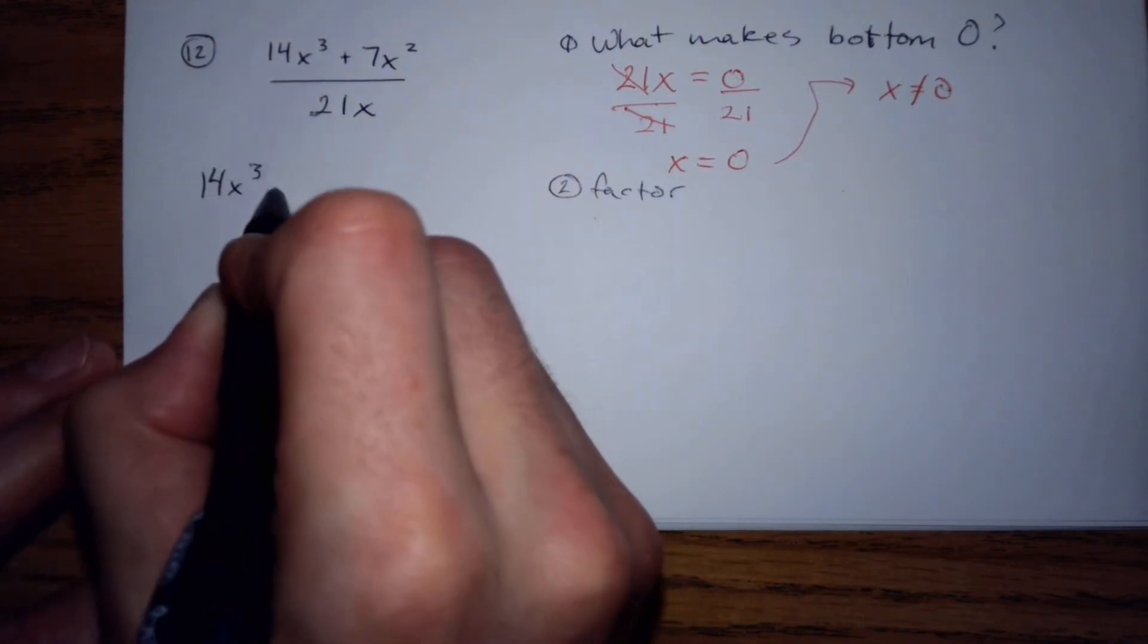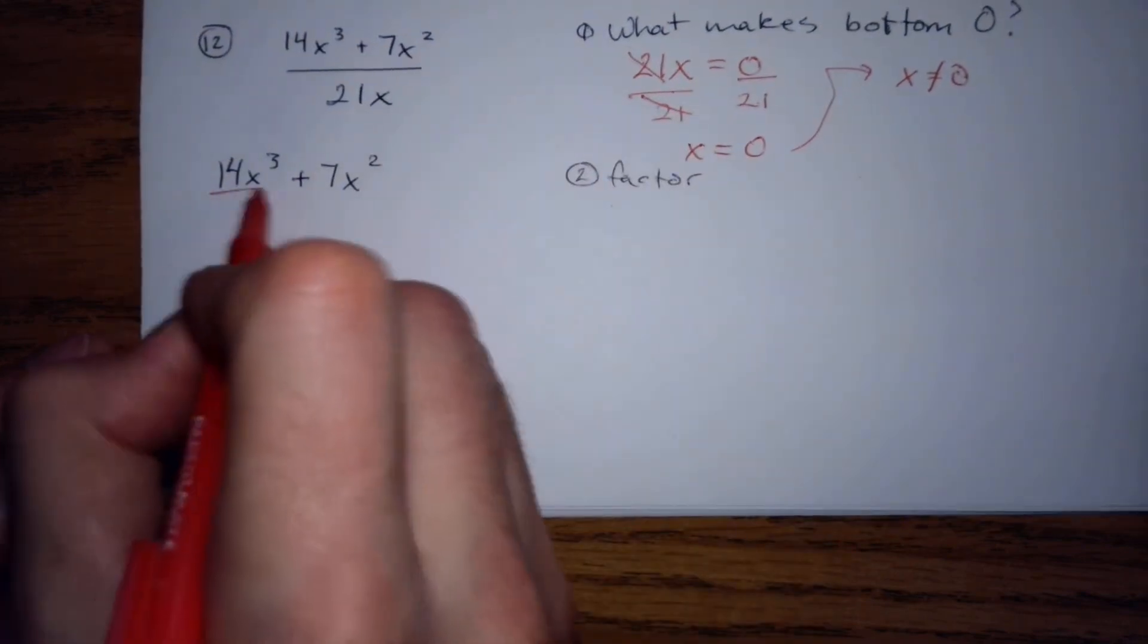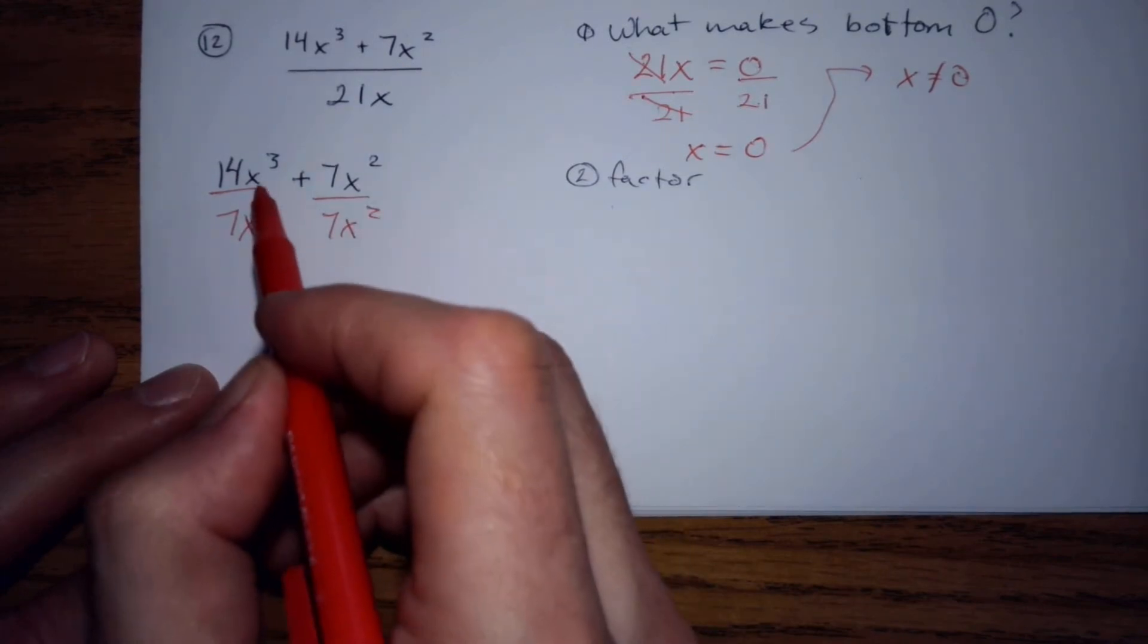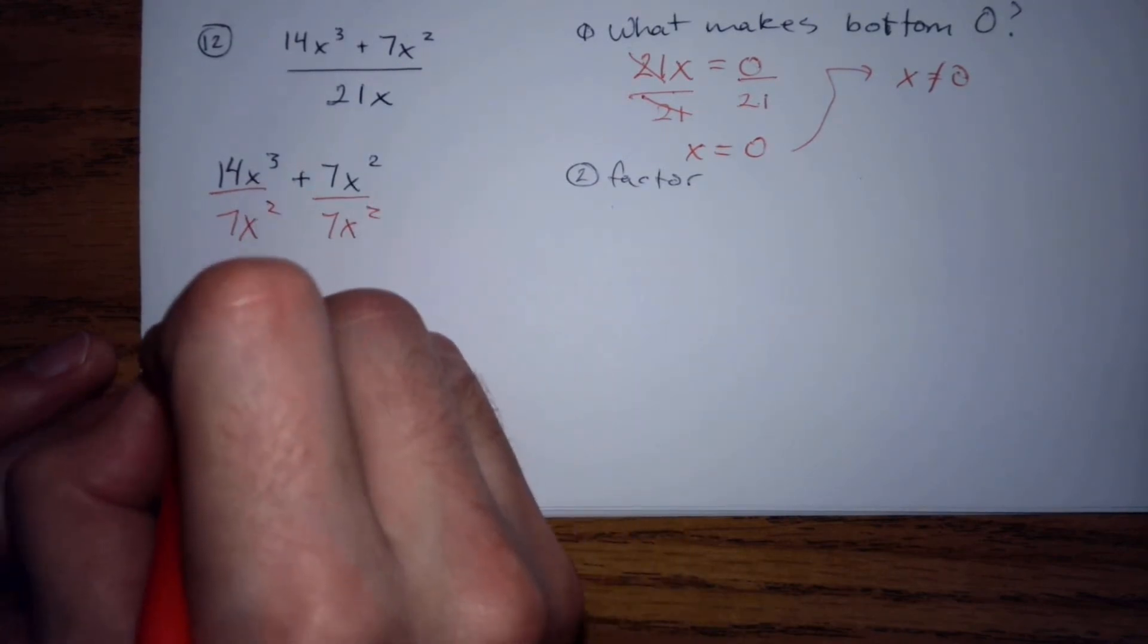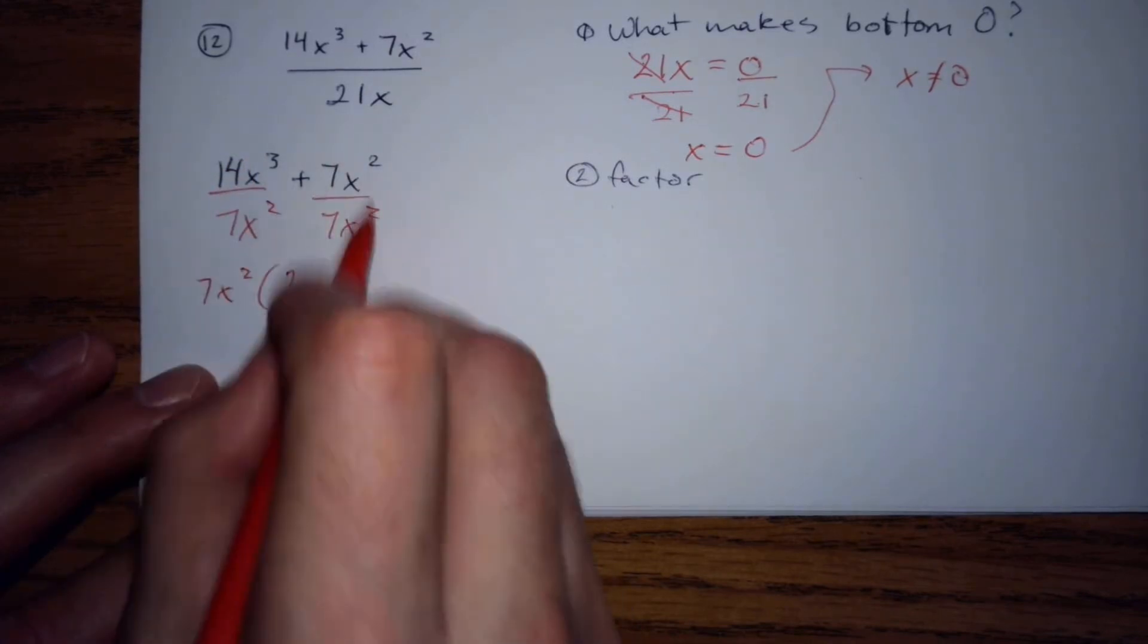14x cubed plus 7x squared. I can take 7x squared out. And that's as big as I can go. 2x plus 1.